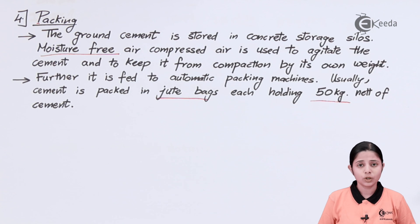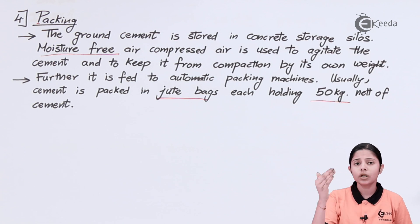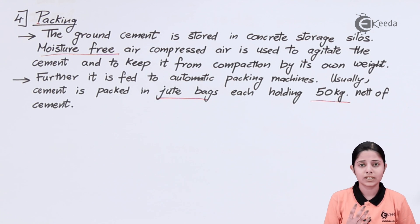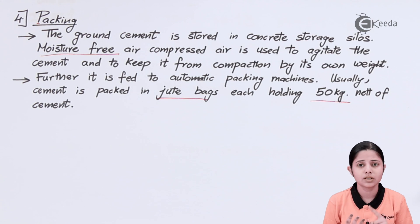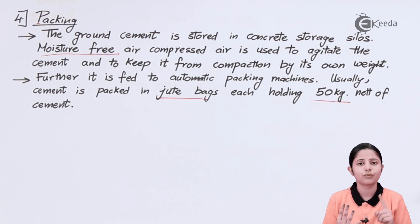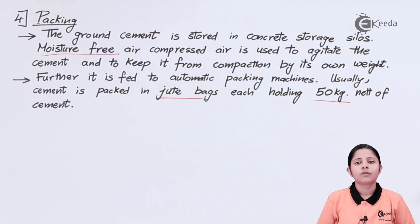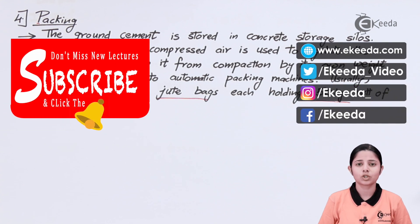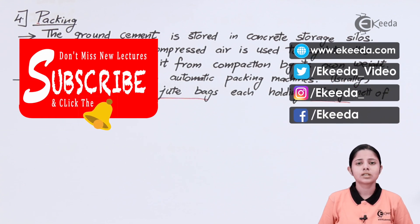In this session we studied about the wet process of manufacturing Portland cement and saw all the different phases. There were four main phases: first, mixing of raw materials; second, burning of raw materials; third, grinding; and finally, packing. We studied each phase in detail with the help of diagrams and chemical reactions. Thank you for watching — stay tuned to Ekeeda and subscribe to Ekeeda.